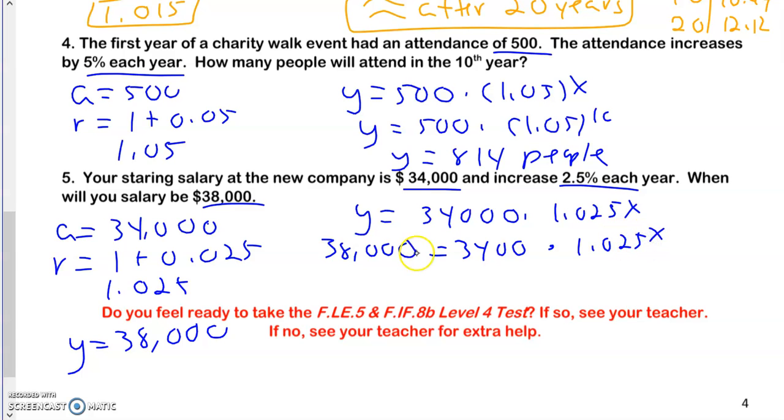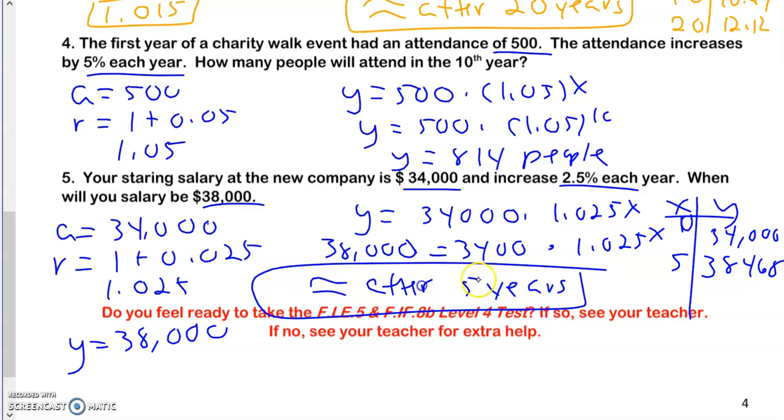So now we're going to do guess and check. Year 0, I'm at 34,000. Then I'm going to try 5. Because I noticed 34 and 38 is not a lot, so I just tried 5. I'm just going to start it off the bat. And when I put 5 in for X, I got this. That is pretty close to the salary. I'm done. So after 5 years will be my answer.